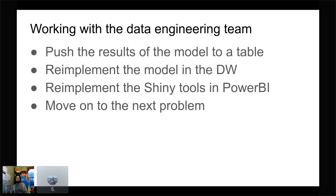So how has this helped us work better with the data engineering team, which was the whole aim? The simplest thing is we can just push the results to a table — we've already been trying things like that. We're still kind of holding them, which isn't ideal, but it's something they can start to understand. Then they can re-implement the model in the data warehouse — it's written in a modular format, pretty much in their language since it's built from their own SQL tables. Then they can re-implement or take over the Shiny application. We show it, gather feedback, make changes, and then hand it over — it's yours, you're in control — and we move on to the next problem.